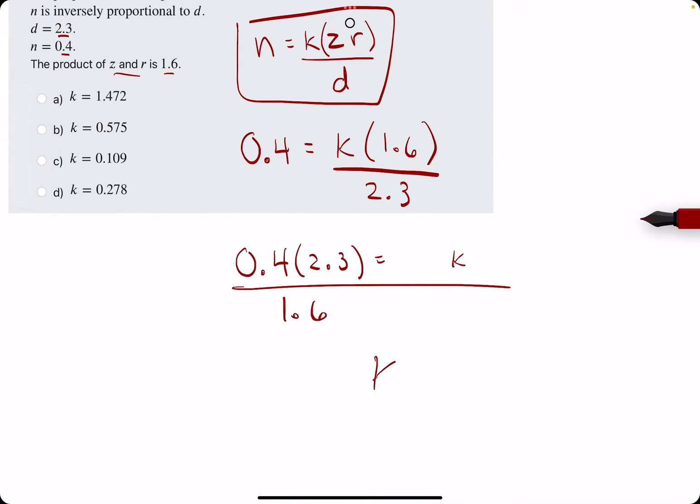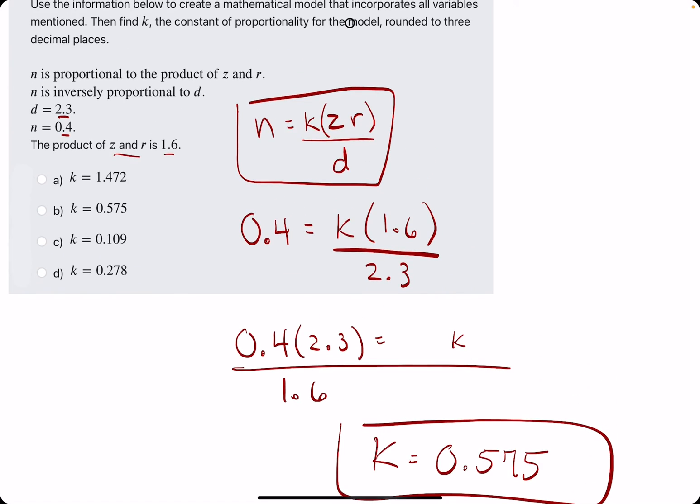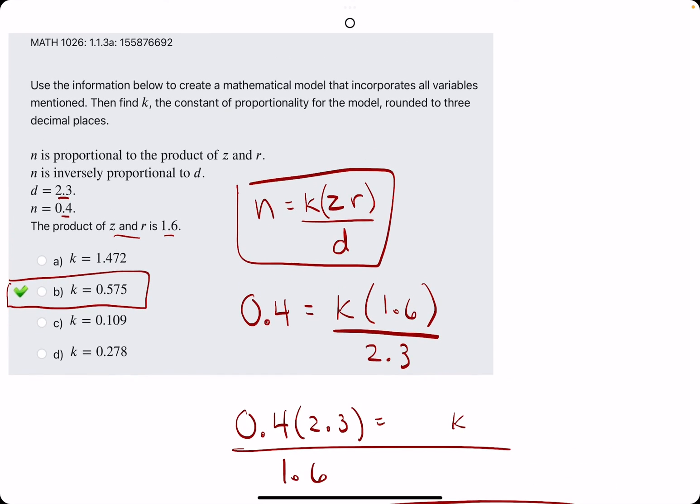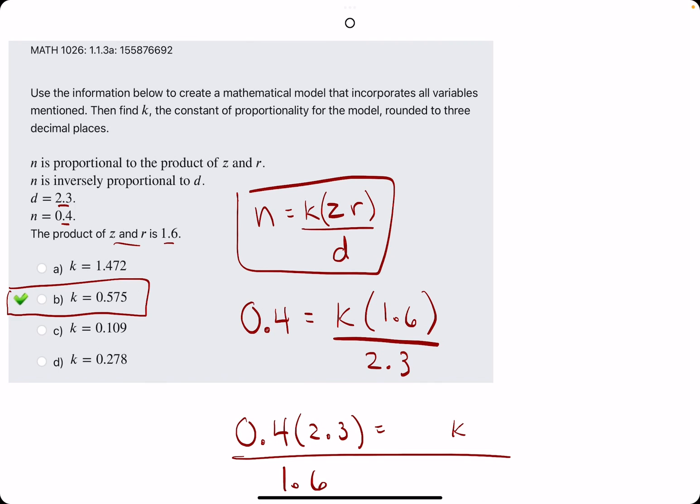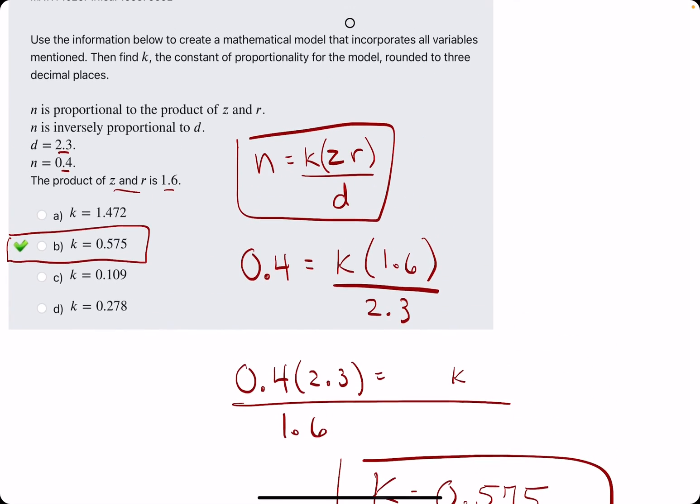So k is equal to 0.575, and that's all there is to it. We break out the eraser, and we see that b is our answer. I'll work out at least one more of these types of problems. Feel free to check it out.